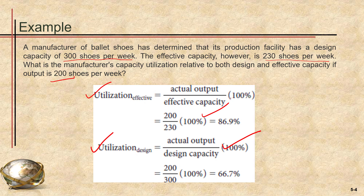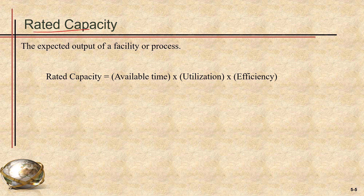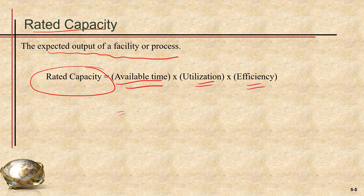I hope you got the idea of how to calculate efficiency and utilization and the clear difference between them. We also calculate rated capacity, which is used when we are interested in finding the expected output of a facility. The formula is: available time multiplied by utilization multiplied by efficiency — that gives you the rated capacity, telling you how much time has been efficiently worked. Thank you so much. See you in the next video.